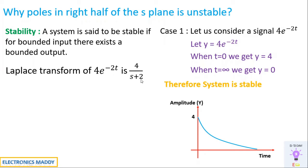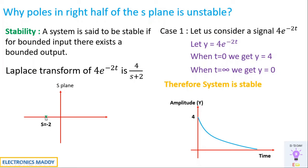Now let us apply the Laplace transform to 4e^(-2t), which gives 4/(s+2). To locate the pole in the s-plane, we set s+2=0, giving s = -2. This pole is located at s = -2 in the left half of the s-plane. Since we have already verified the system is stable, the pole at s = -2 is also stable. Therefore, poles located in the left half of the s-plane are stable.